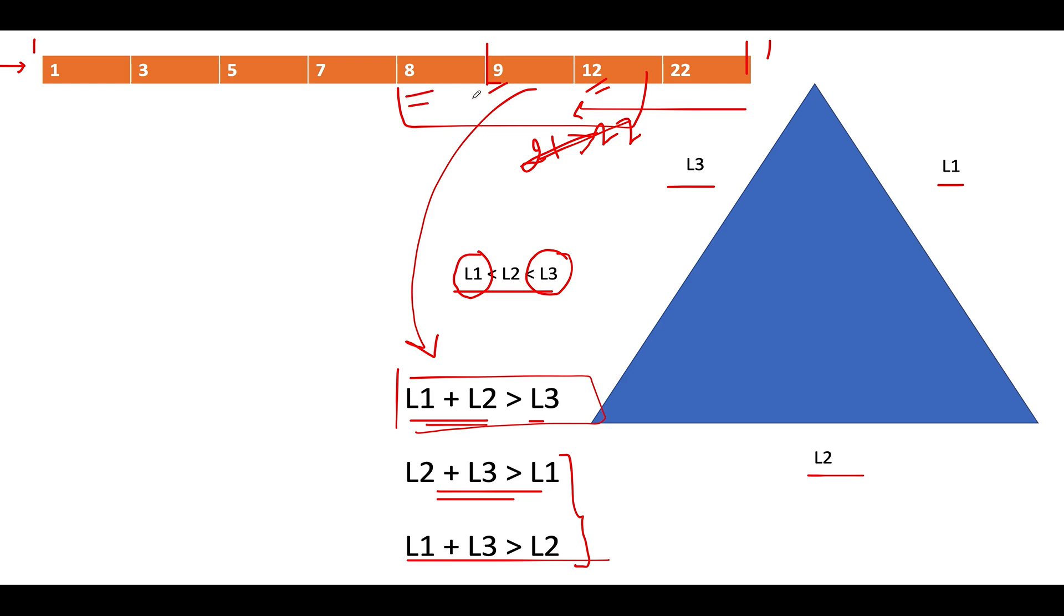And let's again check whether the sum of the least two elements out in this window - 8 plus 9 gives you 17. Is 17 greater than 12? The answer is yes. So that simply signifies that using these three numbers we will form a triangle.